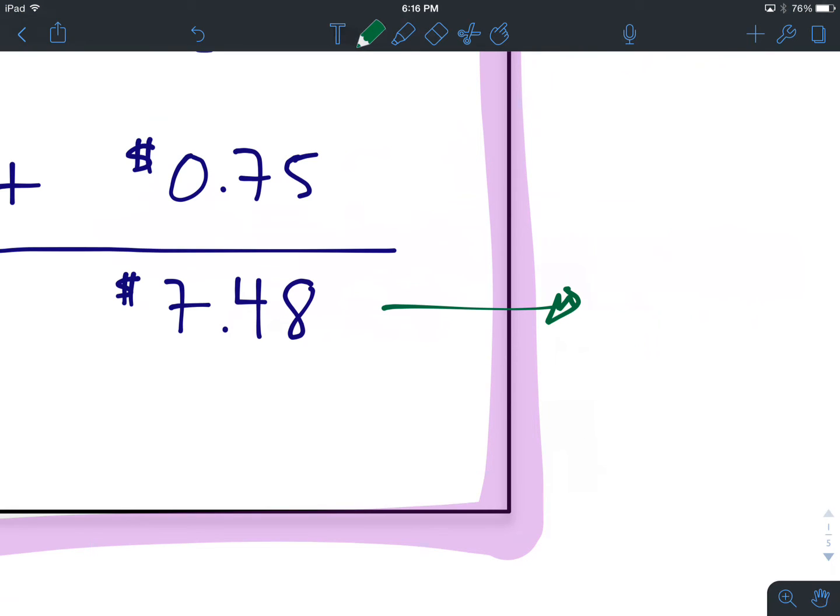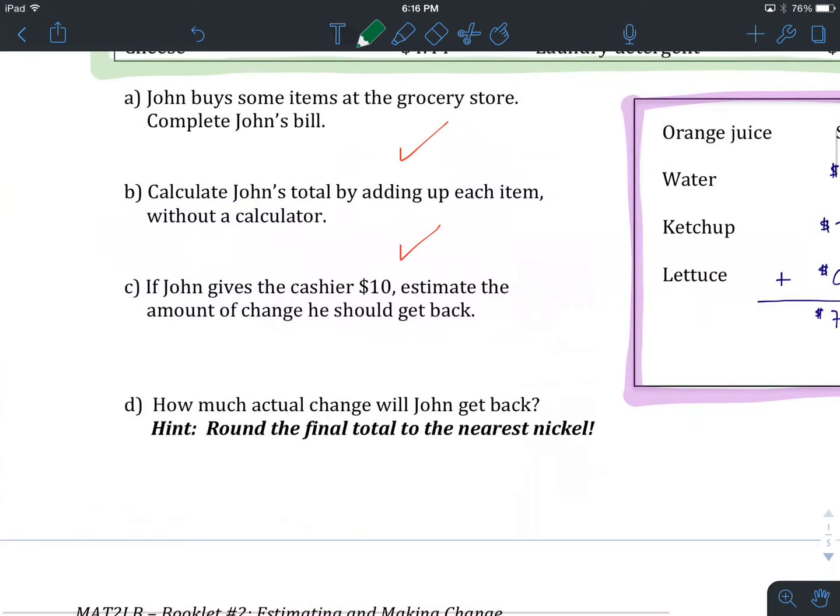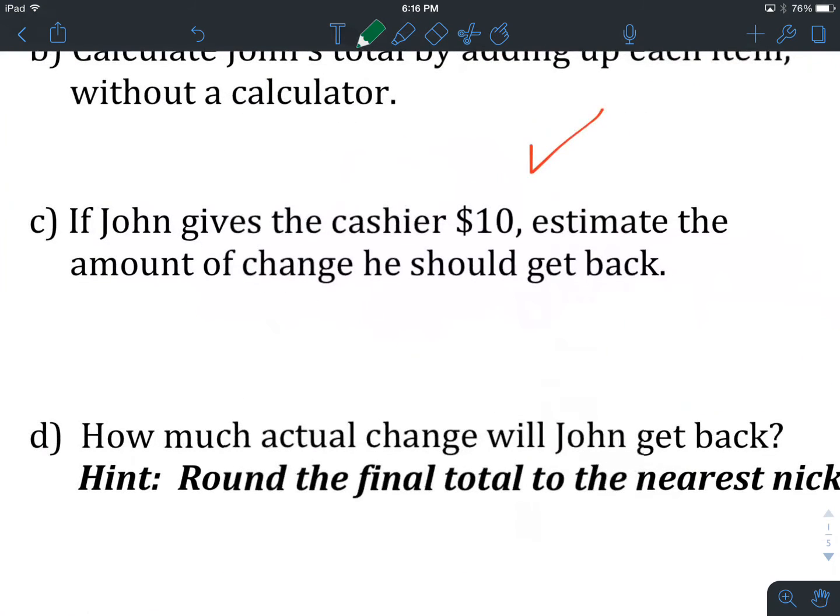Okay, hopefully you recognize that $7.48 will be rounded to $7. So, our estimated amount of change will be the $10 that John gives the cashier minus the $7 estimate that he owes for his groceries, which will give us approximately $3 that we should get back.